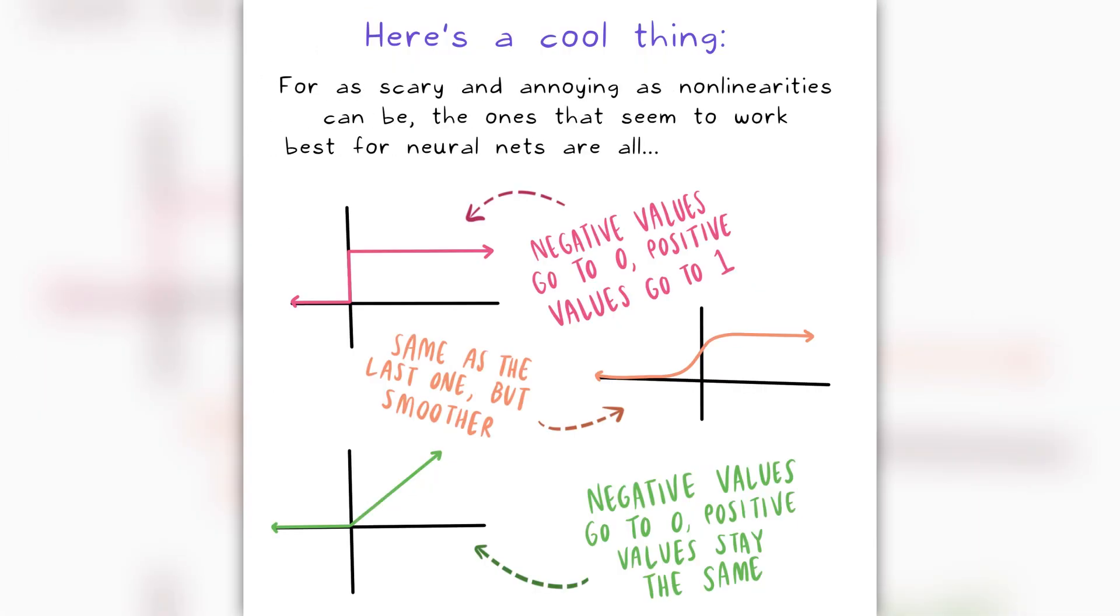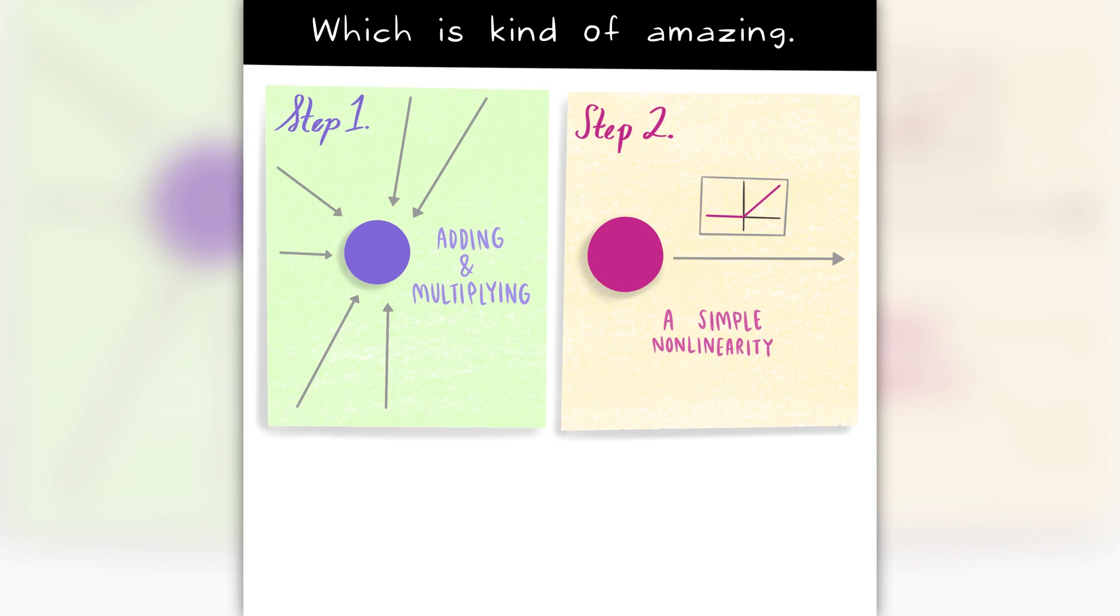Here's a cool thing, for as scary and annoying as non-linearities can be, the ones that seem to work best for neural nets are all pretty nice. Which is kind of amazing.